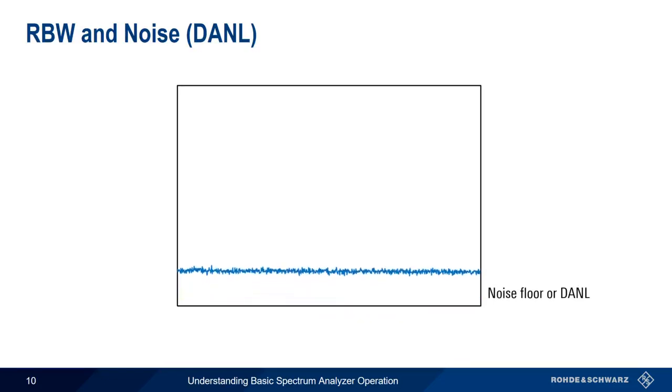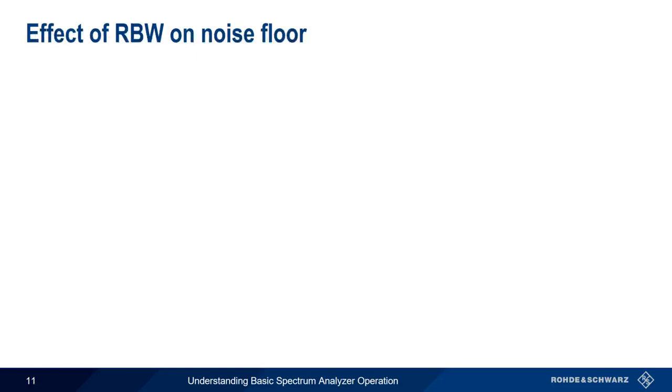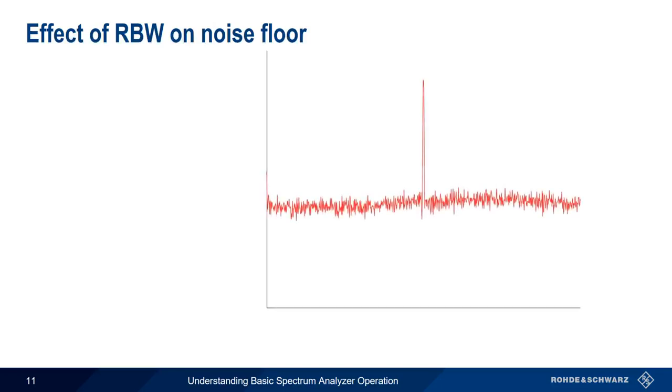The noise floor rises or falls depending on the chosen resolution bandwidth. Let's look at what happens to the noise floor as we decrease resolution bandwidth. We'll use a simple CW signal and a rather large span of 2 gigahertz. With a resolution bandwidth of 3 megahertz, the average value of the noise floor is approximately minus 73 dBm.